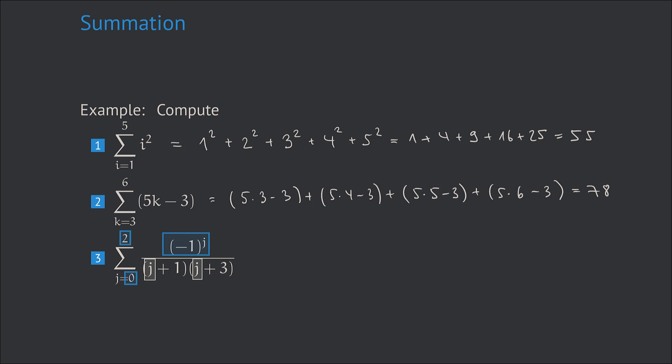Using the summation index as an exponent to minus 1 in that way is often used when we want the summands within the summation to alternate that means to switch between plus and minus plus and minus. Starting with j equals 0 minus 1 to the exponent 0 simply is plus 1 and the values in the denominator get 1 and 3.